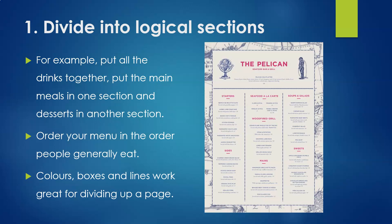Another way to divide your menu up into logical sections is to order the menu in the exact order that people generally eat the food. The starters or entrees will always come first, then we move into the bigger meals — your mains and sides. Coming towards the end, we've got the sweets or desserts. The way we break up our page into logical sections is by using colors, boxes, and lines.